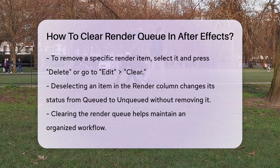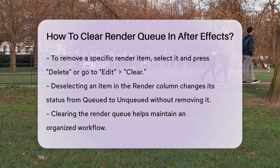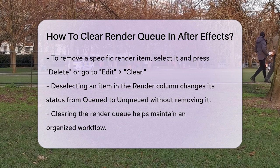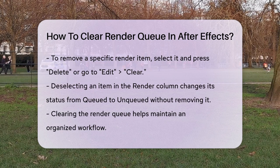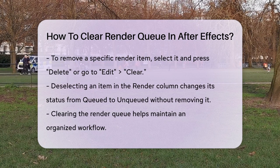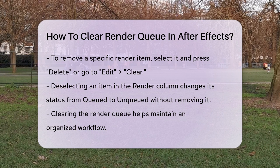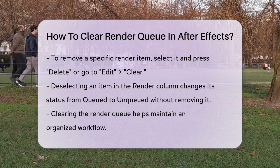If you only want to remove a specific render item, you can select that item and then press the Delete key or choose Edit > Clear from the menu. You can also deselect the item in the render column to change its status from queued to unqueued, though this won't remove it from the panel entirely.